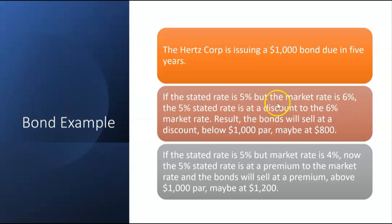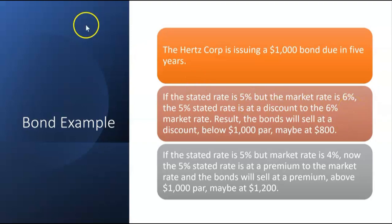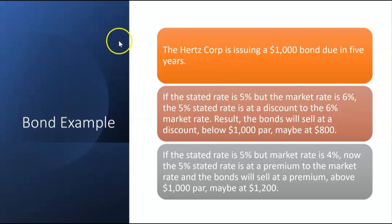The bonds sold at a discount because the stated rate of 5% is at a discount to the market rate of 6% on the day the bonds were issued. Anytime the stated rate is below the market rate, the bonds will sell at a discount.